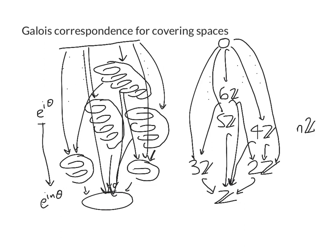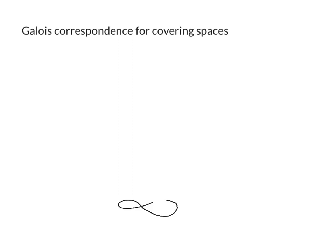A more interesting example: let's take X to be the wedge of two circles. We've seen many examples of covering spaces corresponding to subgroups of ℤ * ℤ, the free group on two generators a and b. The universal cover is an infinite 4-valent graph where all the horizontal edges are labelled with single arrows and all the verticals are labelled with double arrows — this is the universal cover of the figure eight, corresponding to the trivial subgroup.